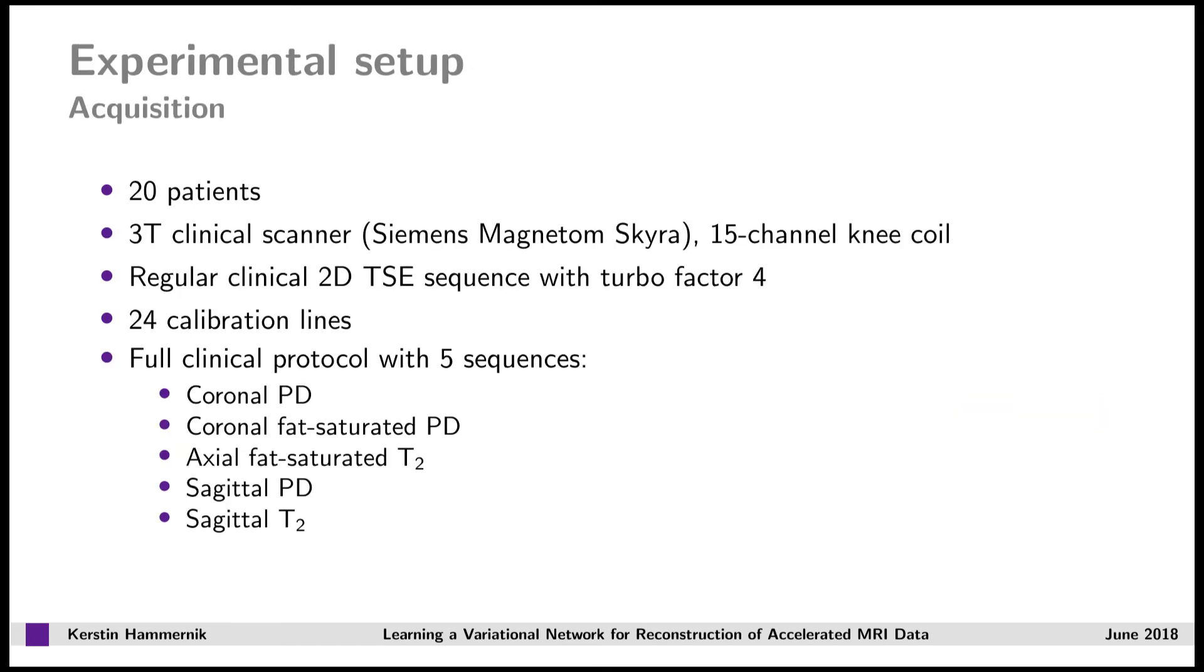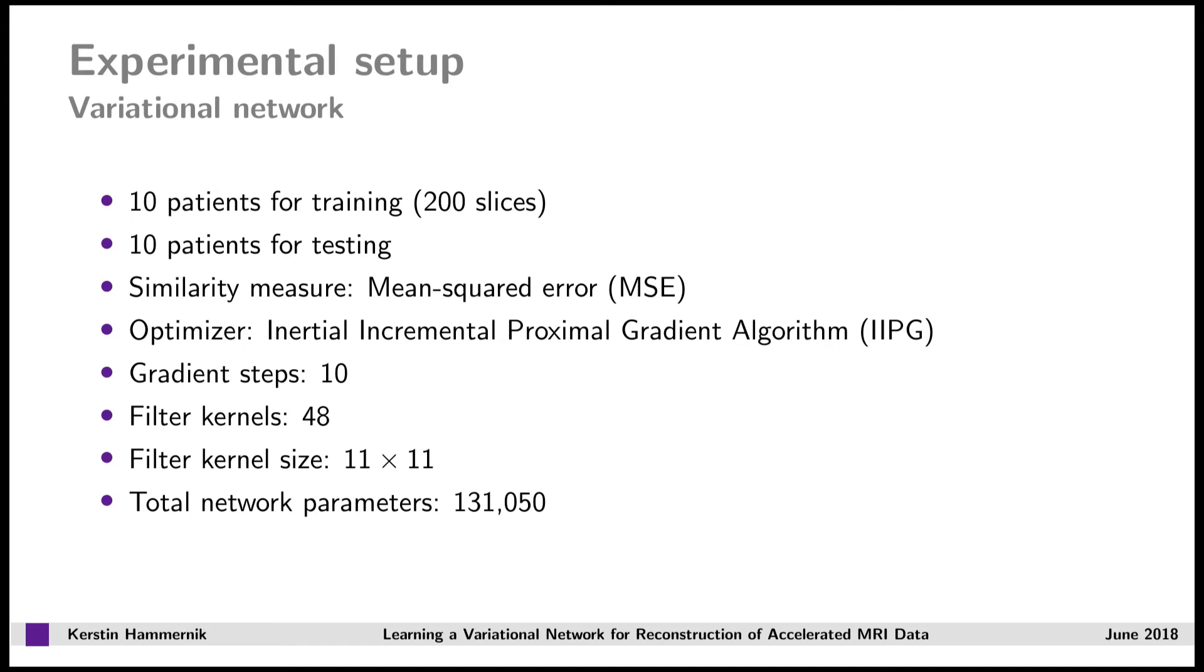For our experiments, we scanned 20 patients using a 3T clinical scanner and a 15 channel knee coil. We acquired a full clinical protocol with five sequences, which differed in terms of contrast, orientation, and SNR. For our variational network, we used 200 slices from 10 patients for training and the remaining 10 patients for testing. We used a mean squared error as similarity measure, and an inertial incremental proximal gradient algorithm for optimization.